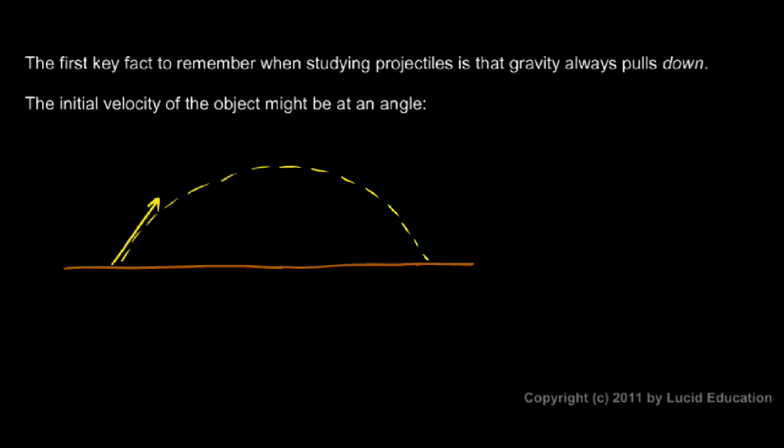The initial velocity, that's this vector right here. That vector represents its initial speed—the speed with which it was thrown.